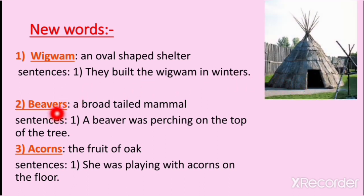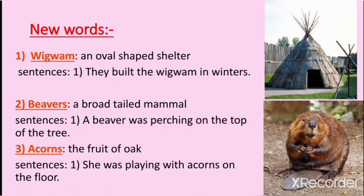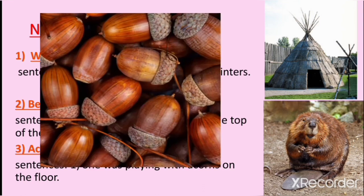Beaver — beaver means a broad-tailed mammal. Sentence: A beaver was perching on the top of the tree. This is beaver. Acorns — acorns means the fruit of oak. Sentence: She was playing with acorns on the floor. This is the fruit acorns.